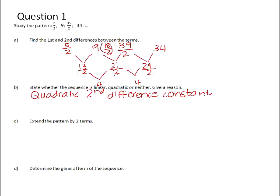Question C, extend the pattern by two terms. So we need to think, what would the next first difference be? And you can see that from 13 to 21, we added 8. And from 21 to 29, we've added 8. So that means our next first difference will be 37 over 2.